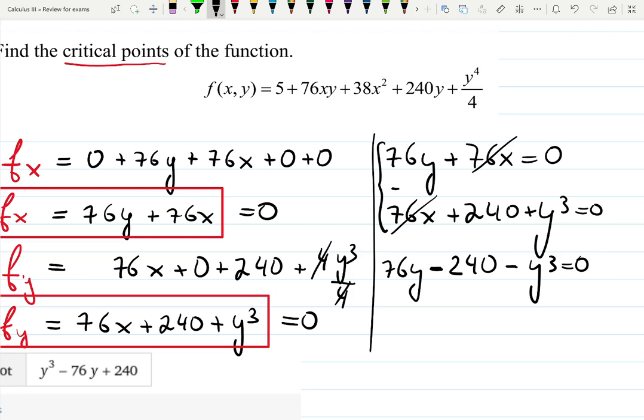Since it's equal to 0, I can divide by the negative sign and rearrange everything. So it will be a cubic function. y³ minus 76y plus 240 equals to 0.